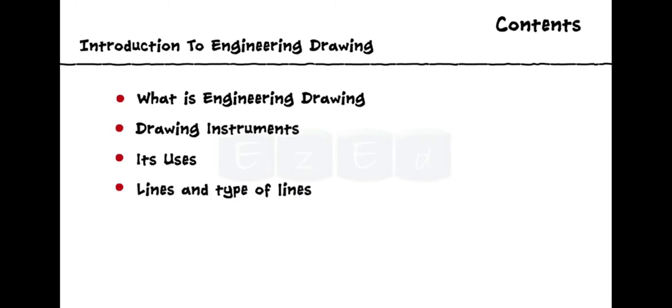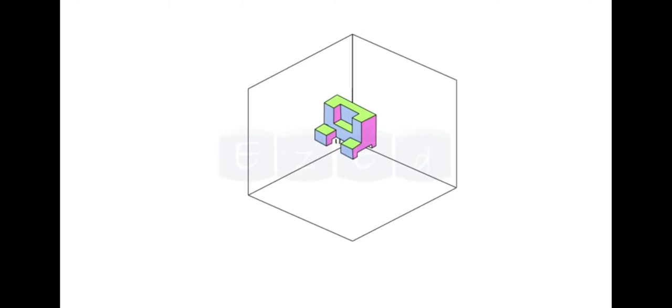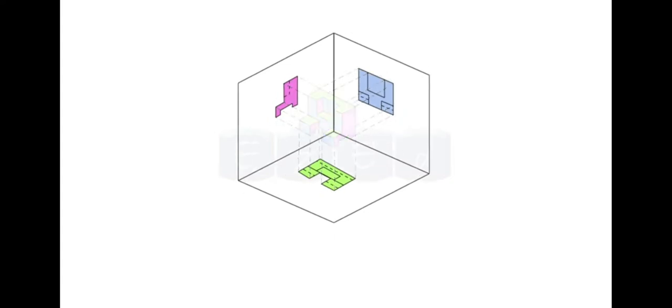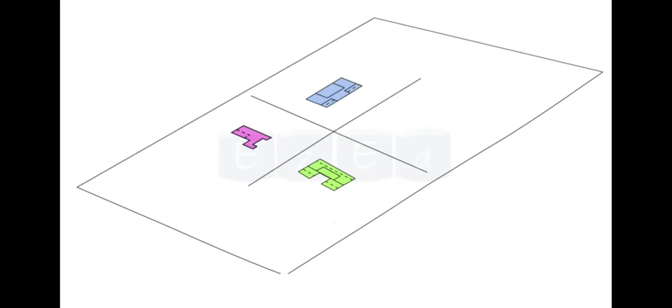First, we will see what is engineering drawing. Engineering drawing is a type of technical drawing which is used to clearly define the requirements for engineered items such as views, dimensions, and necessary information. We need to change 3D to 2D pictures. It is also a language, a graphical language that communicates ideas and information from one mind to another.